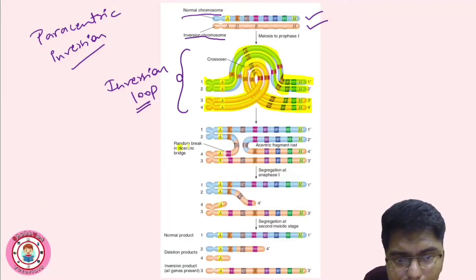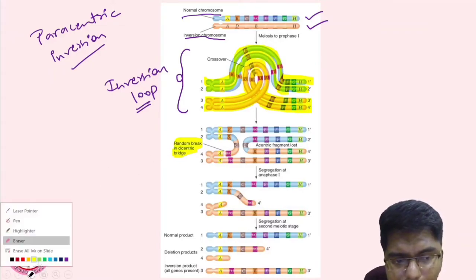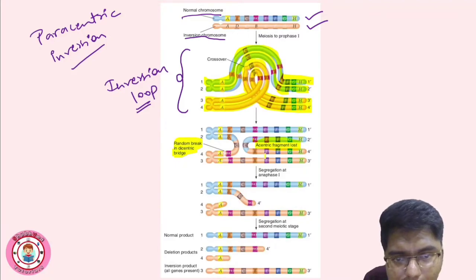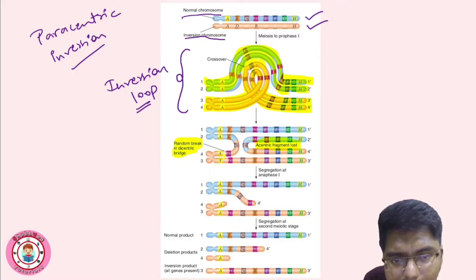This is known as a dicentric bridge. During chromosome segregation this bridge is broken. Centromeres attach to the mitotic spindle. The acentric fragment is the one without a centromere. Since this chromosome has two centromeres, it is called a dicentric chromosome. The acentric fragment is lost during meiotic division.